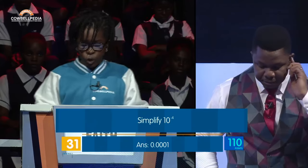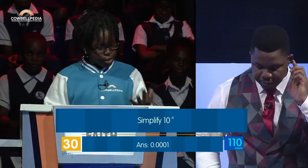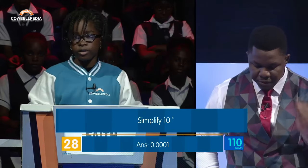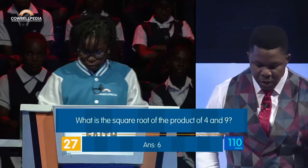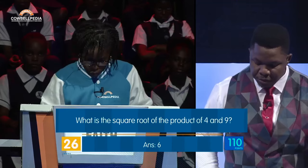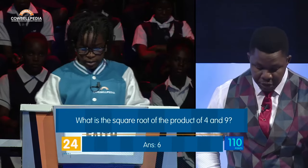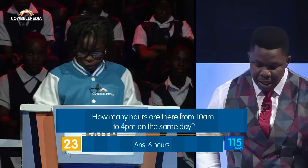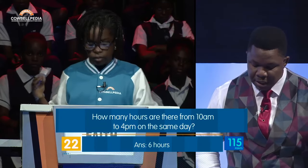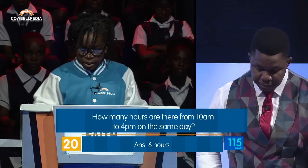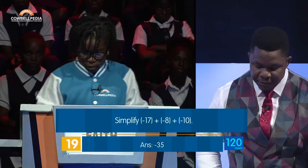Simplify 10 over 3 by minus 4. 0.00001. Incorrect. What is the square root of the product of 4 and 9? 6. Correct. How many hours are there from 10 a.m. to 4 p.m. on the same day? 6. Correct.